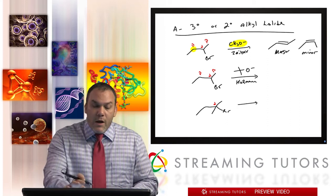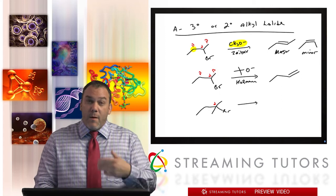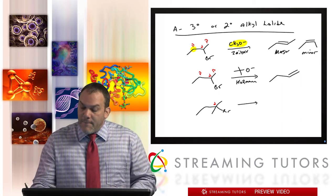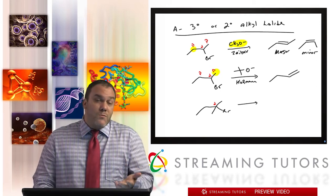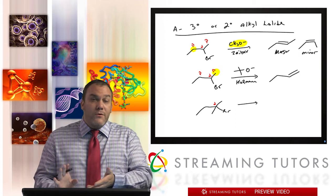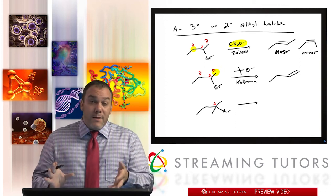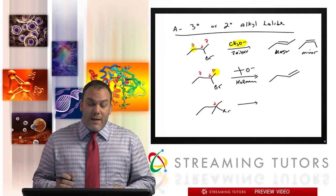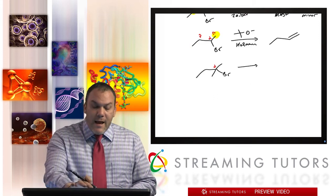If we have a bulky base, we're going to pull from the beta carbon that has more H's. So we pull from the right carbon with three H's. This gives a terminal alkene, and there is no cis/trans isomerism because the end carbon of a terminal alkene has two H's — you can't have cis/trans when two of the same group are on the same double bond carbon.